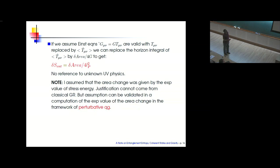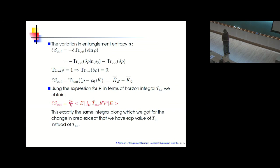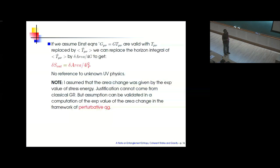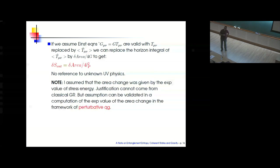It looks like G comes in because you are using gravity: T-mu-nu has to curve the spacetime. Actually this whole calculation is done by Eugenio in the context of perturbative gravity to leading order in Newton's constant, where the perturbation is an actual quantum operator, the area is an expectation value, the stress energy is an expectation value, and you get this answer with the right 4L_P squared.